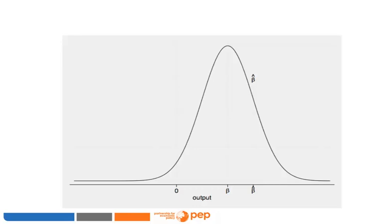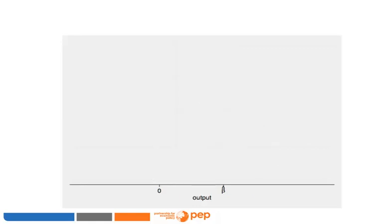Estimators are random variables with distributions of probabilities: on the horizontal axis are the values the estimator can take, and on the vertical axis is the probability of observing each value. In this example, there is a non-zero probability of obtaining a particular point estimate or an even higher value — given by the area under the curve in the right-hand tail. There is a higher probability that the estimate is near the true mean treatment effect beta, but you cannot know exactly where your point estimate falls with respect to this distribution.